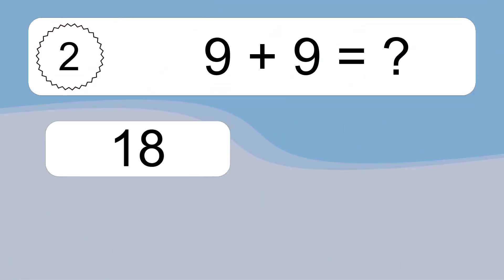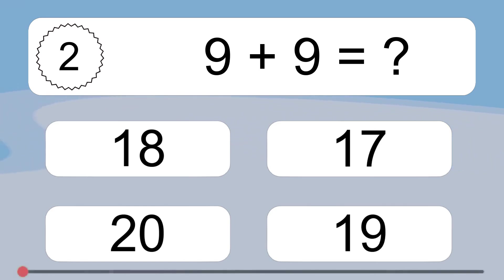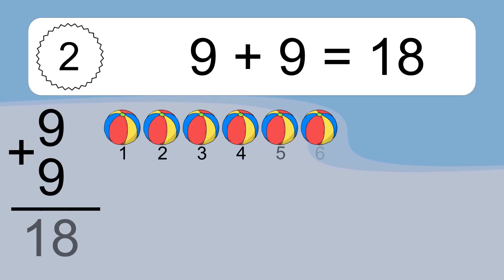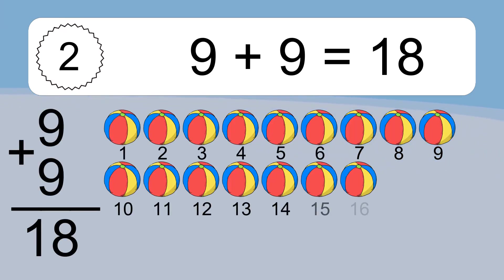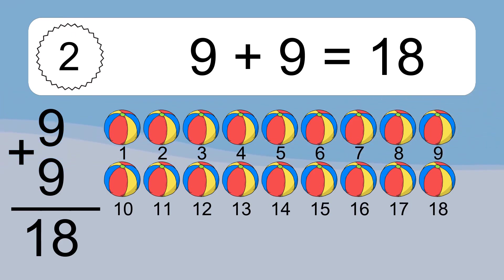9 plus 9 equals what? 9 plus 9 equals 18. Let's count it. 1, 2, 3, 4, 5, 6, 7, 8, 9, 10, 11, 12, 13, 14, 15, 16, 17, 18.